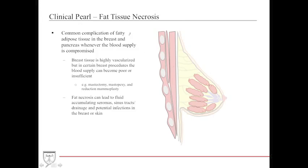Fat tissue necrosis can happen wherever there is fat, such as in the breast or pancreas. When blood supply is compromised, adipose tissue dies, producing oily secretions, seromas, sinus tracts, and increased infection risk. Breast procedures such as mastectomy, mastopexy, reduction mammoplasty, and even breast augmentation with excessive manipulation of fatty tissue are highly predisposed to breast tissue necrosis.